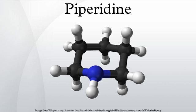Piperidine prefers a chair conformation, similar to cyclohexane. Unlike cyclohexane, piperidine has two distinguishable chair conformations: one with the N–H bond in an axial position, and the other in an equatorial position. After much controversy during the 1950s through 1970s, the equatorial conformation was found to be more stable by 0.72 kcal/mol in the gas phase.